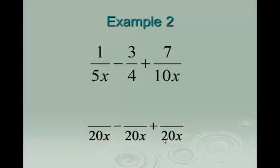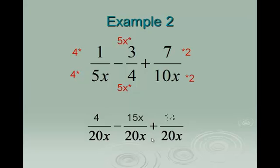Then the first fraction — originally our denominator was 5x, we're changing it to a common denominator of 20x. What should we multiply by? 4. That whole first fraction multiplies by 4, and the new top will be 4. On the second fraction, the new common denominator is 20x; originally my denominator was 4, so what should I multiply by? 5x. That changes the top to 15x. On the last fraction, original denominator was 10x, new common denominator is 20x — multiply by 2. That changes the top to 14.